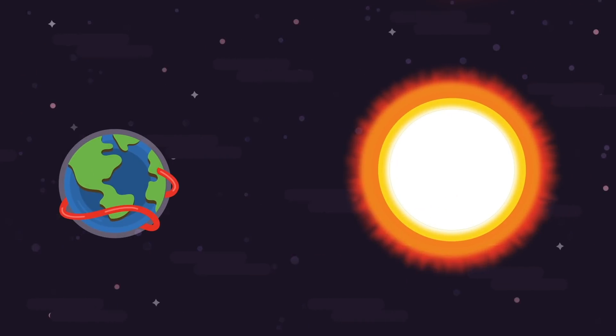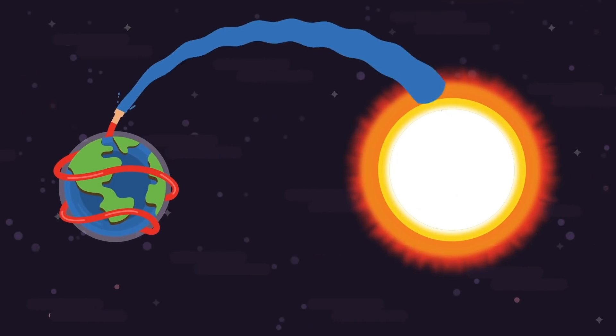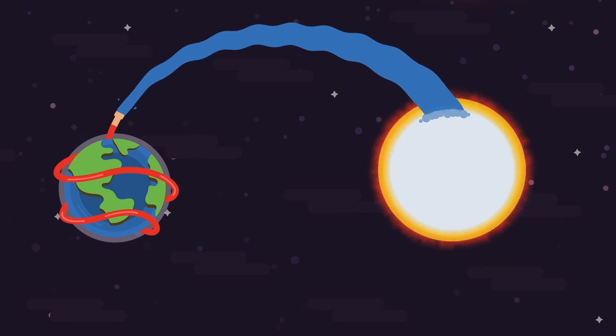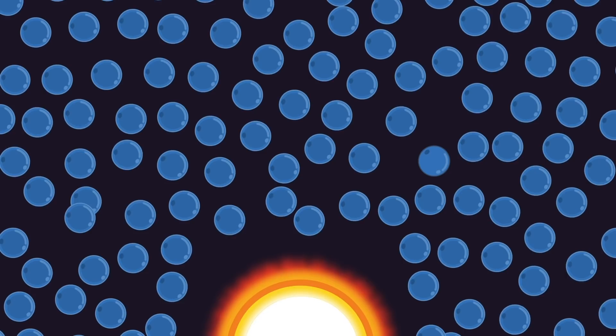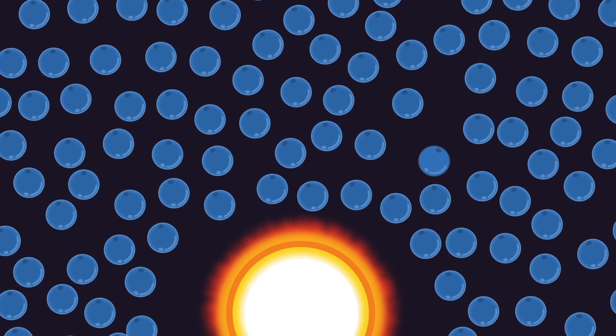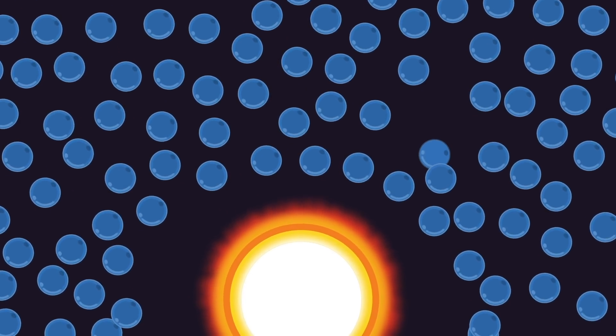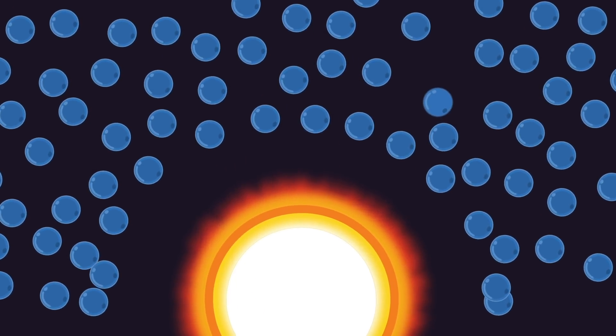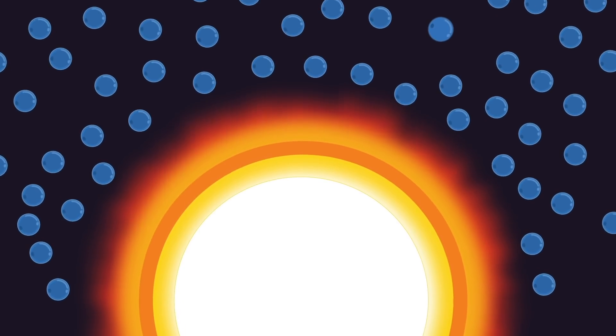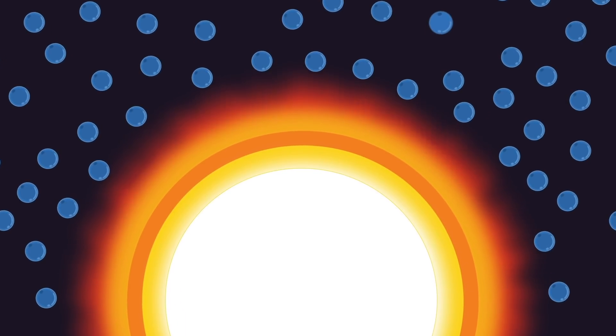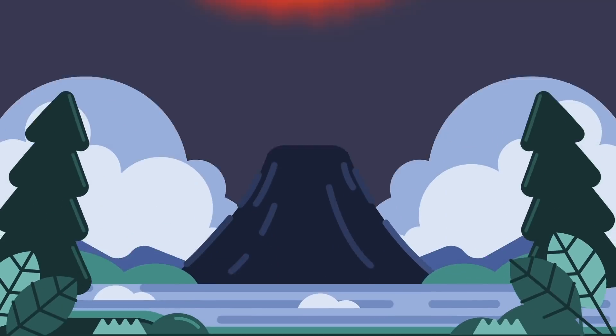But what if we tried putting out the Sun with water? Let's imagine we had a massive planet made entirely of water. In fact, there are over 4,000 planets in the Milky Way alone made of water. So let's throw all of them at the Sun. Well, the Sun's mass is over 300,000 times the mass of Earth and makes up 99.8% of the entire solar system's mass. So throwing all 4,000 planets would be like throwing a glass of water into a volcano.